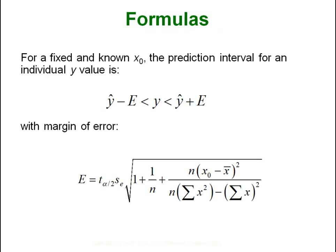So now for a fixed and known x₀, what we are going to do is we are going to build a prediction interval for our predicted y based on a specific x. It kind of makes sense, because if you are going to predict something out of a regression equation you have to have an input. You have to have that x. Once you put that x into the equation it spits out a y. Then we can build an interval around that y.